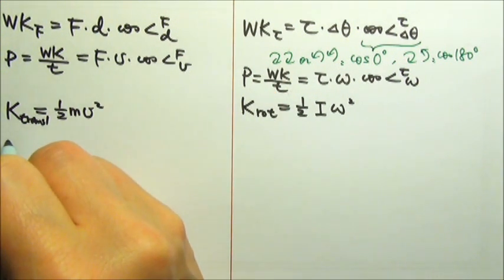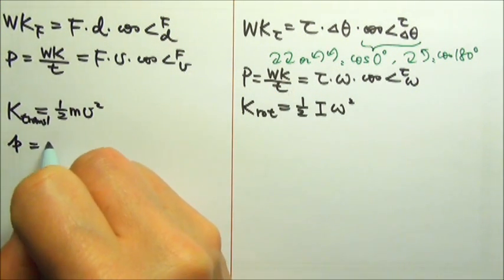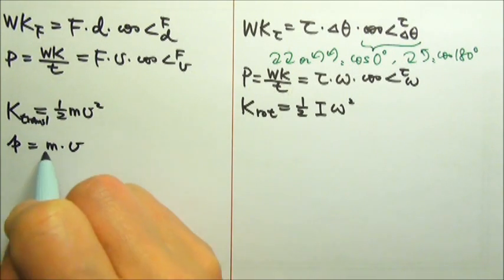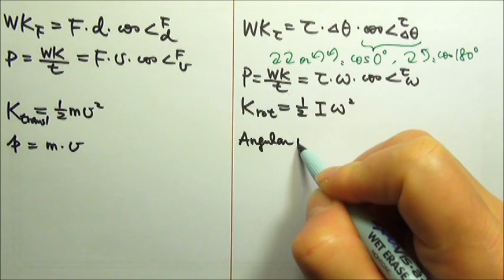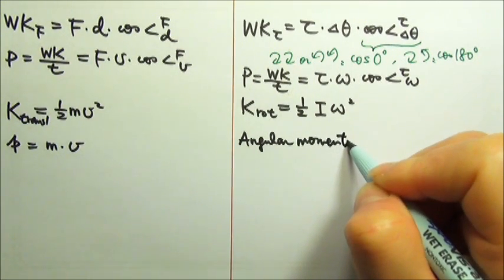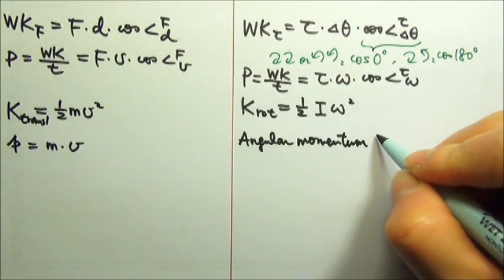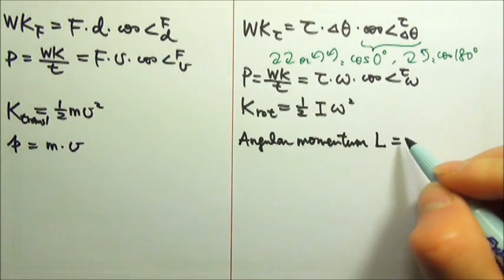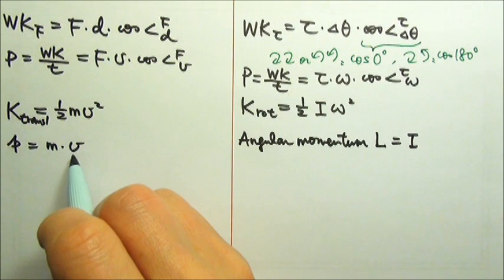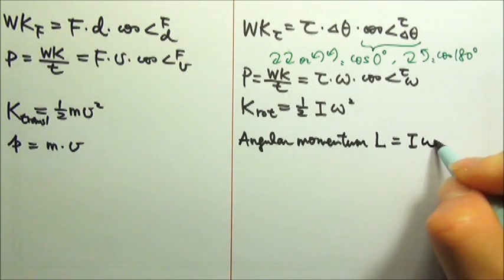And then we talked about momentum. Momentum is m times v, mass times velocity. And we have this thing called the angular momentum, which we use capital L for it. Instead of mass, we have I. Instead of velocity, we have angular velocity.